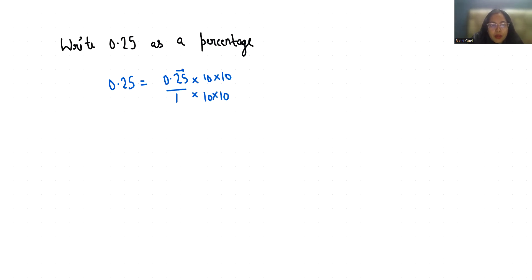Now to convert into percentage, the symbol of percentage is this and it equals 1 by 100. So in place of 1 by 100 we can write this symbol. We can write this as 25 times 1 by 100, and 1 by 100 equals percentage.